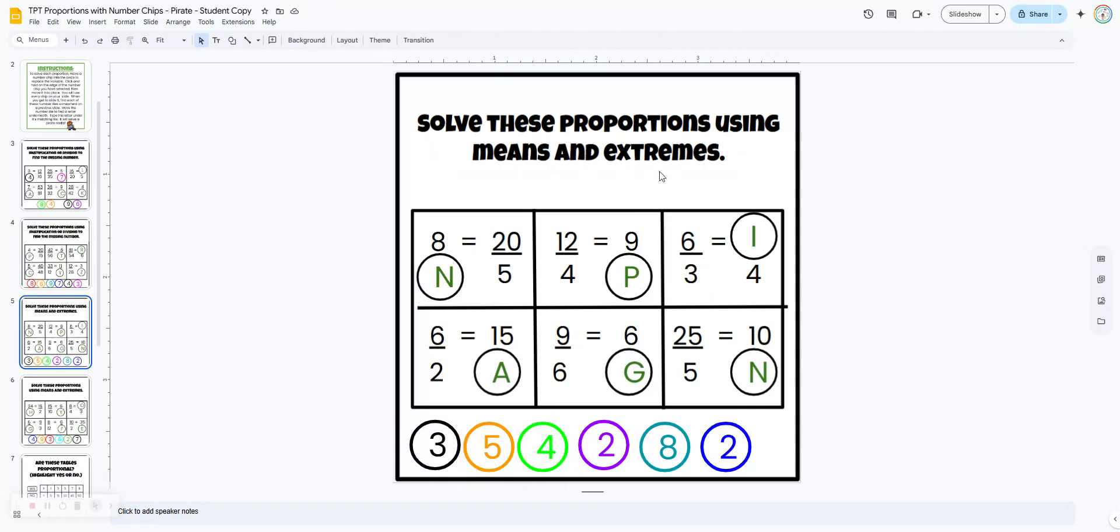They're going to use means and extremes. So what that means is the numbers that are diagonally across from each other are going to have the same product. So 8 times 5 is 40. That means 20 times this number has to also be 40. So that makes it a 2. 4 times 9 is 36. So 12 times 3 would also be 36.